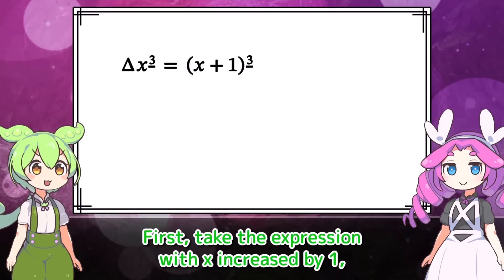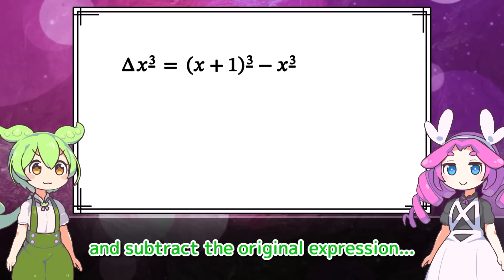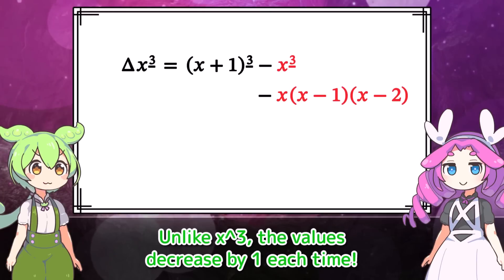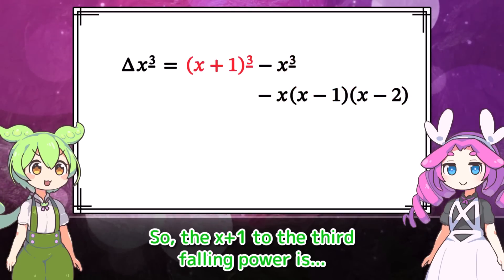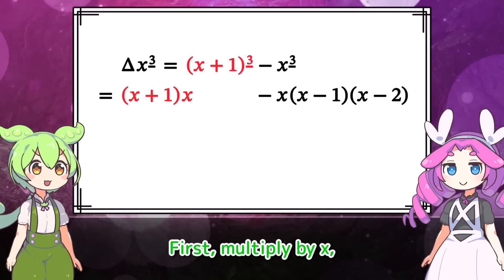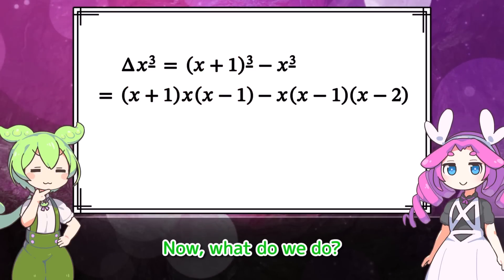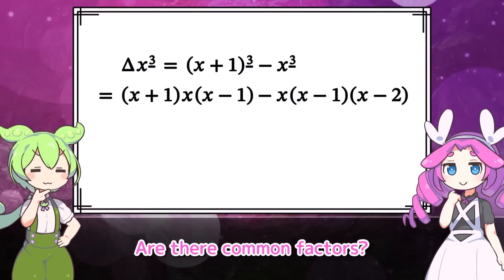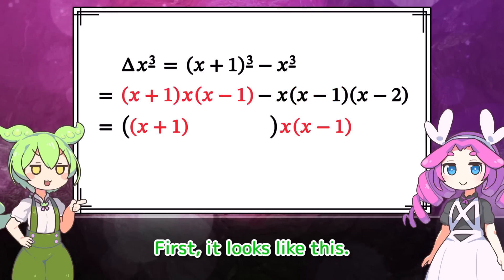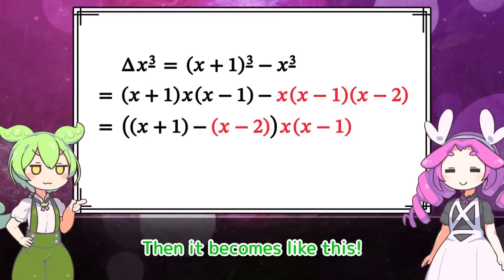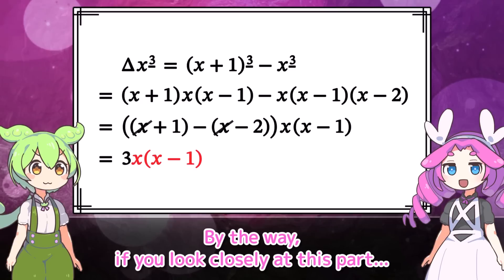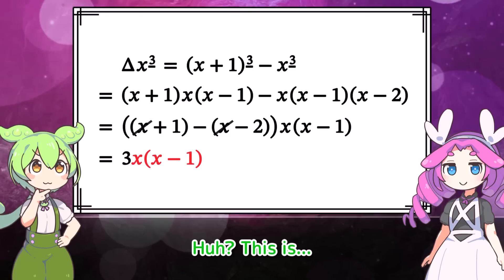First take the expression with x increased by 1 and subtract the original expression. x to the third falling power looks like this — unlike x cubed, the values decrease by 1 each time. So x plus 1 to the third falling power starts at x plus 1 and decreases by 1 each time: multiply by x, then multiply by x minus 1. These parts are definitely common factors. If we factor them out, then the x terms cancel out. And if you look closely at this part — this is x to the second falling power.